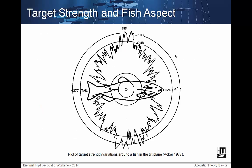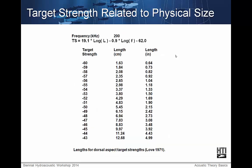The direct measuring approach is to isolate echoes from single fish, measure the beam pattern factor, compensate for it, and apply the proper scale factor. Here is a diagram of a fish with different target strength values based on the aspect of the fish. Here is an empirical relationship to relate fish size with target strength, developed by Love in 1971, and is the usual go-to comparison between target strength and fish length.